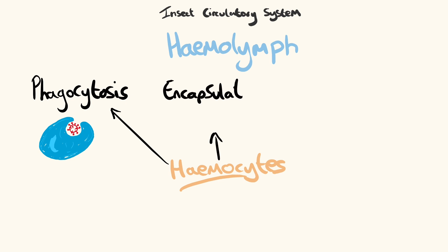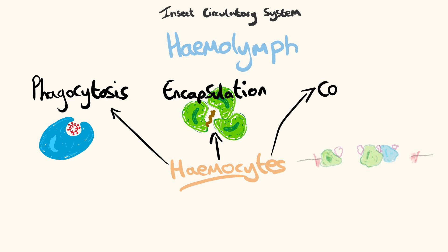Encapsulation, where haemocytes conform to an adhesive state, group together and surround larger foreign invaders such as parasites to isolate them. And haemolymph coagulation.